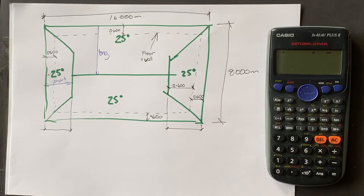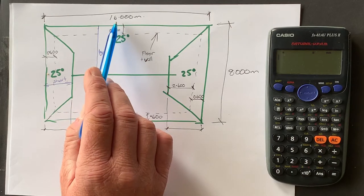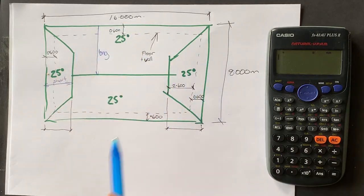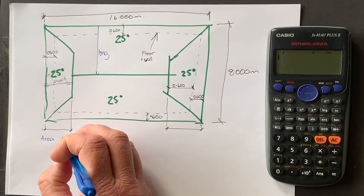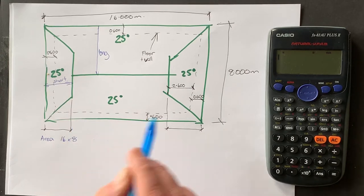So the first thing I want to work out is how many rolls of paper. So we get the total plan area of the roof, so 16 times 8. So the area is 16 times 8, so length times width.